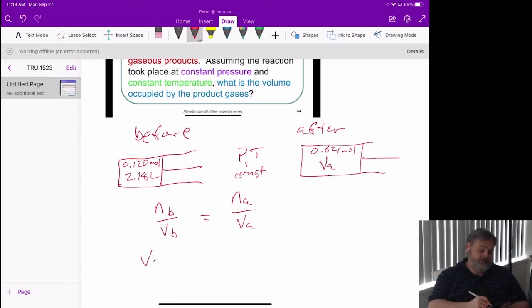If we rearrange this, we'll find our volume after is going to be the number of moles after divided by the number of moles before times that original volume. That's going to be 0.621 moles divided by 0.120 moles, multiplied by our 2.18 liters.